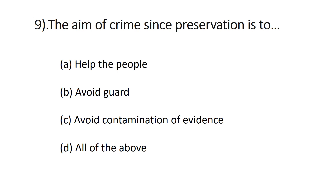Question number nine: the aim of crime scene preservation is to — A) help the people avoid guard, B) avoid contamination of evidence, C) none of the above. The right answer is C, avoid contamination of evidence. If there is a crime scene, you should secure that place because anybody could mix or steal the evidence.